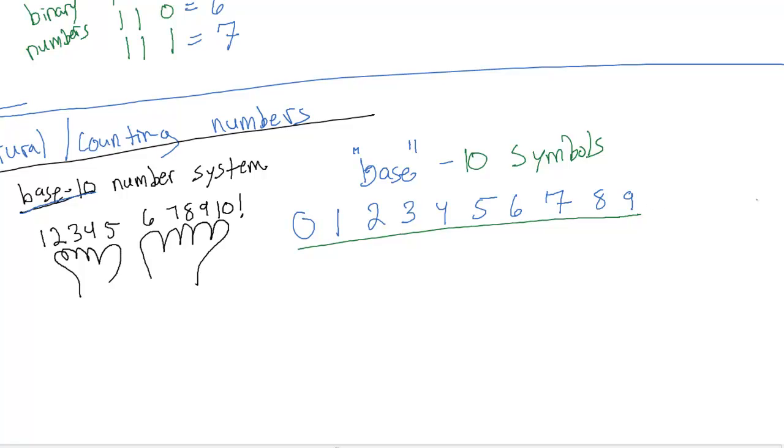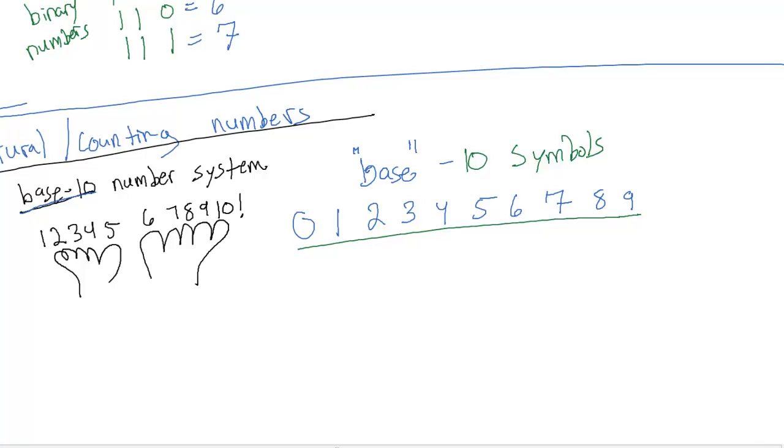Ten symbols to count with. Once we run out of these ten symbols, we have to start combining them. When we jump from 9 to 10, we actually have to use two of these symbols. Another way to think about this: the base describes how many symbols you can have before you have to add another one to keep counting upwards.